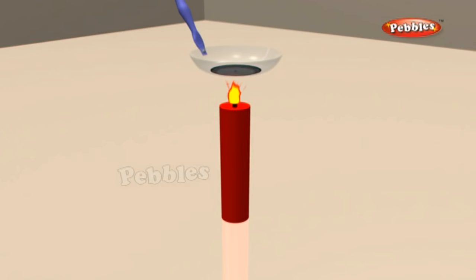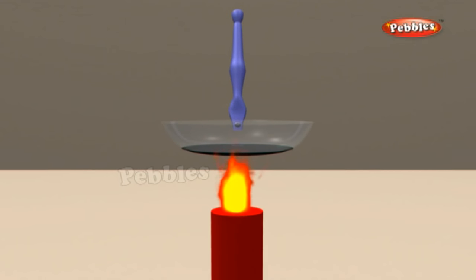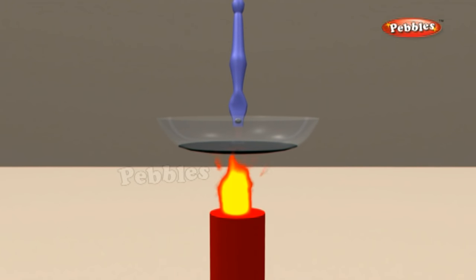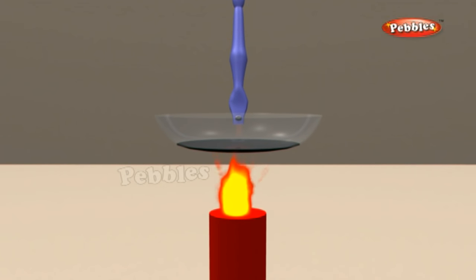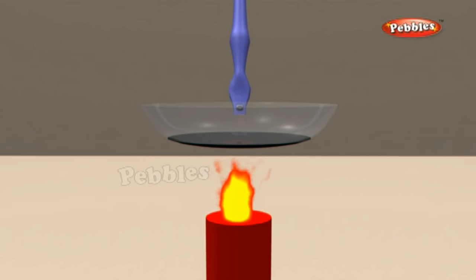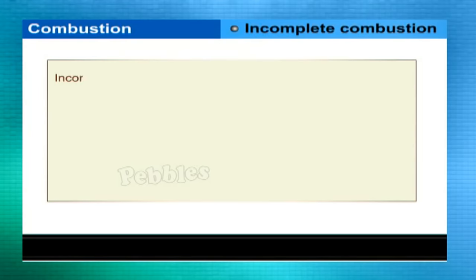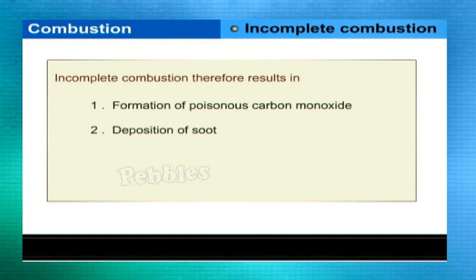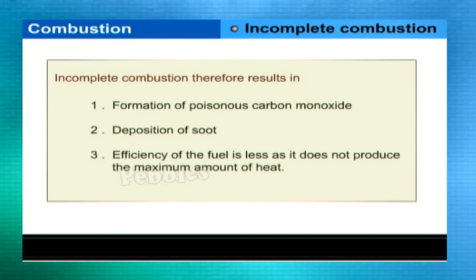Incomplete combustion: burn a candle and hold a china dish over it. A deposit of soot is formed — this soot is nothing but carbon which has not undergone combustion. Incomplete combustion also takes place when camphor is burned. Incomplete combustion results in the formation of poisonous carbon monoxide, deposition of soot, and reduced efficiency of the fuel as it does not produce the maximum amount of heat.